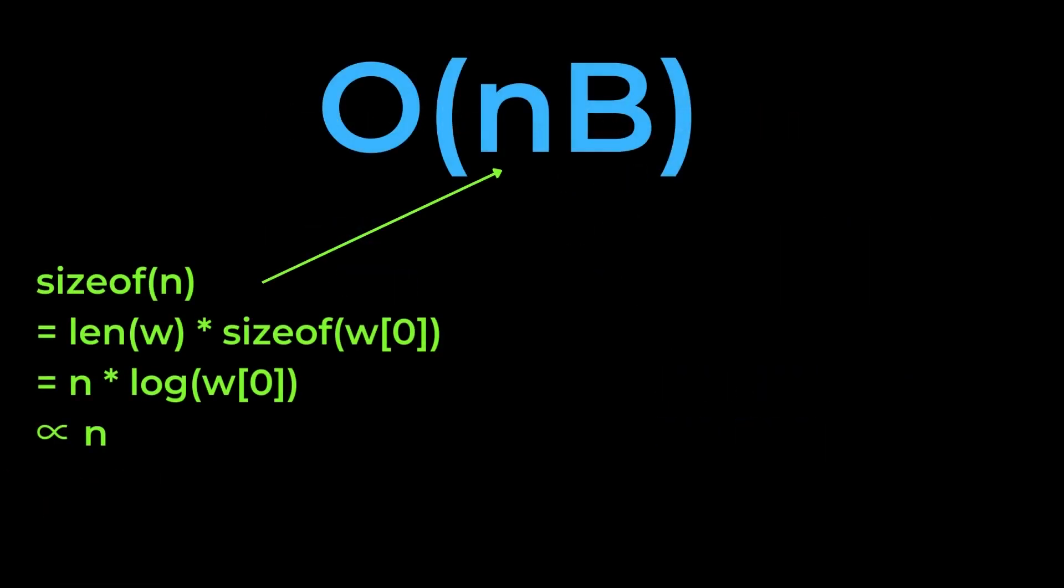Recall that n is simply the size of w. With an array like w, we can assume that all inputs are of the same size. This means we can treat the size of a single element as a constant. The size of the array therefore grows linearly with n, as we also saw with its runtime.